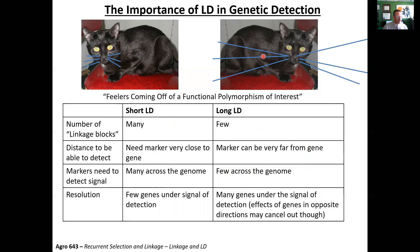You might think that needing fewer markers is the better situation. Well, it depends. If your goal is to identify the causal gene, you're going to want very short LD and diverse populations. If your goal is to identify markers that can be used in marker-assisted selection, then you want relevant breeding material with longer LD, and you need fewer markers.